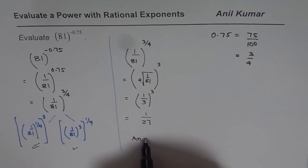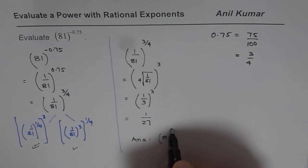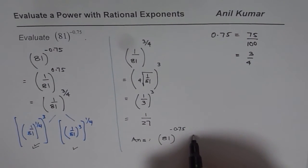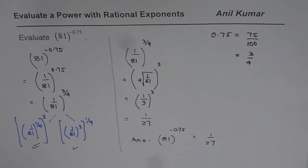So our solution is 81 to the power of minus 0.75 is indeed equals to 1 over 27. So that is how you could solve it. Using calculator, you can check your solution with the other form also.